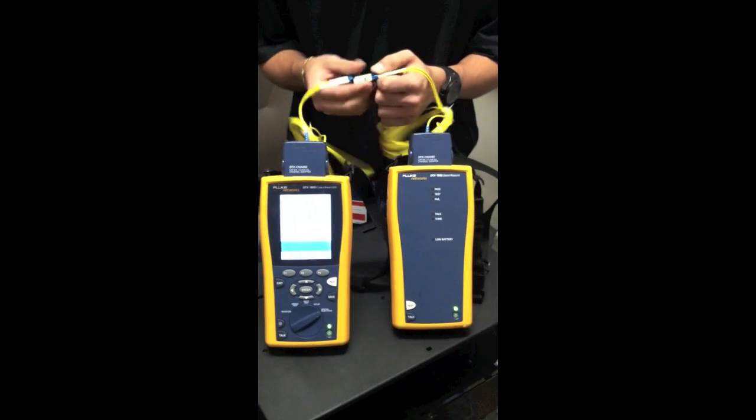So once we have our reference set we're going to disconnect from our coupler. Put this to the side. And if we ever disconnect using one jumper reference never disconnect from the source side. And same thing with the Corning light meter. You never want to disconnect the cable from the source always from the meter side.